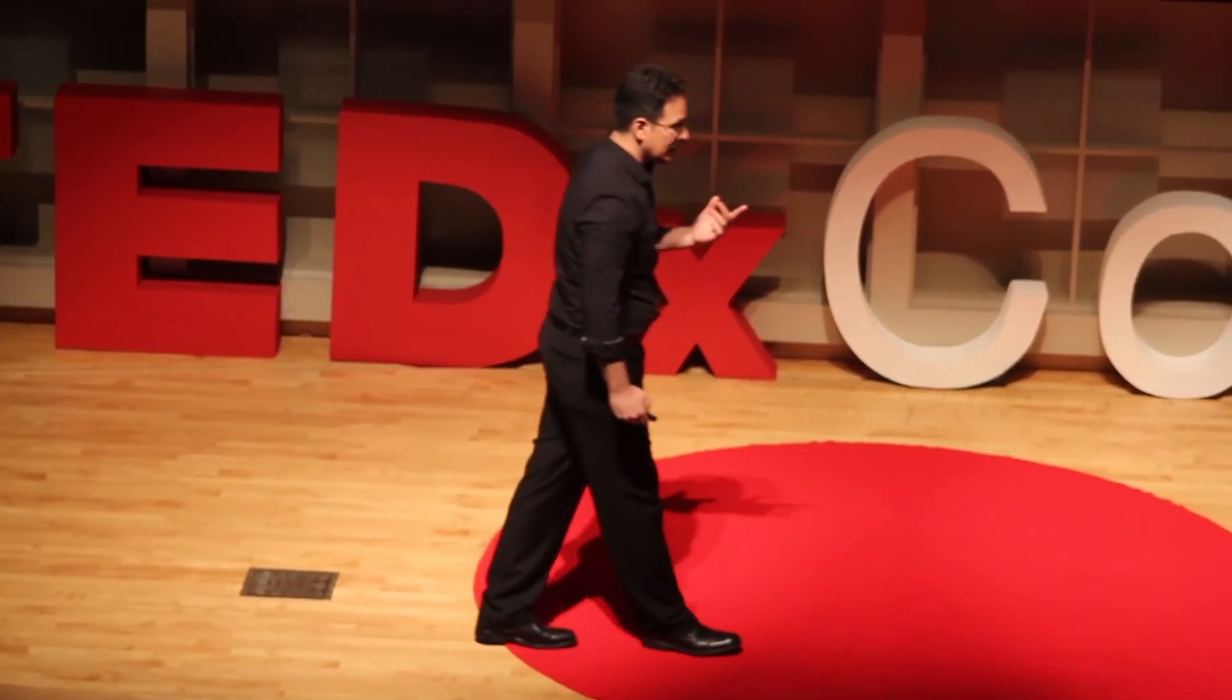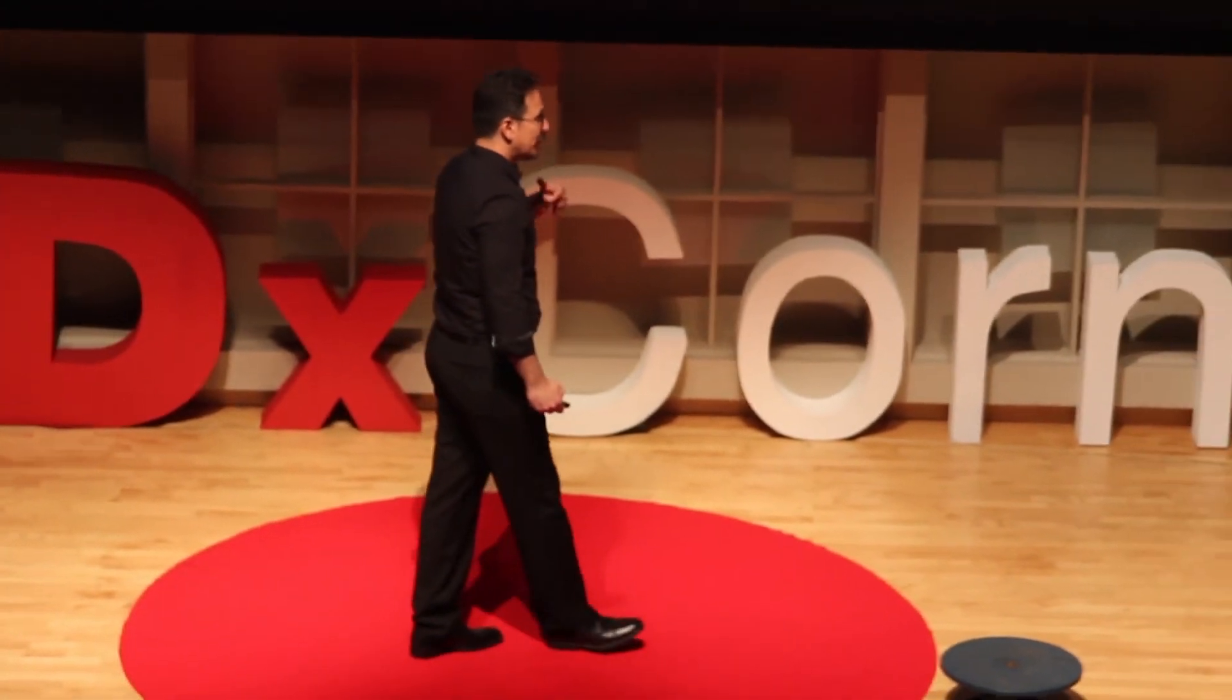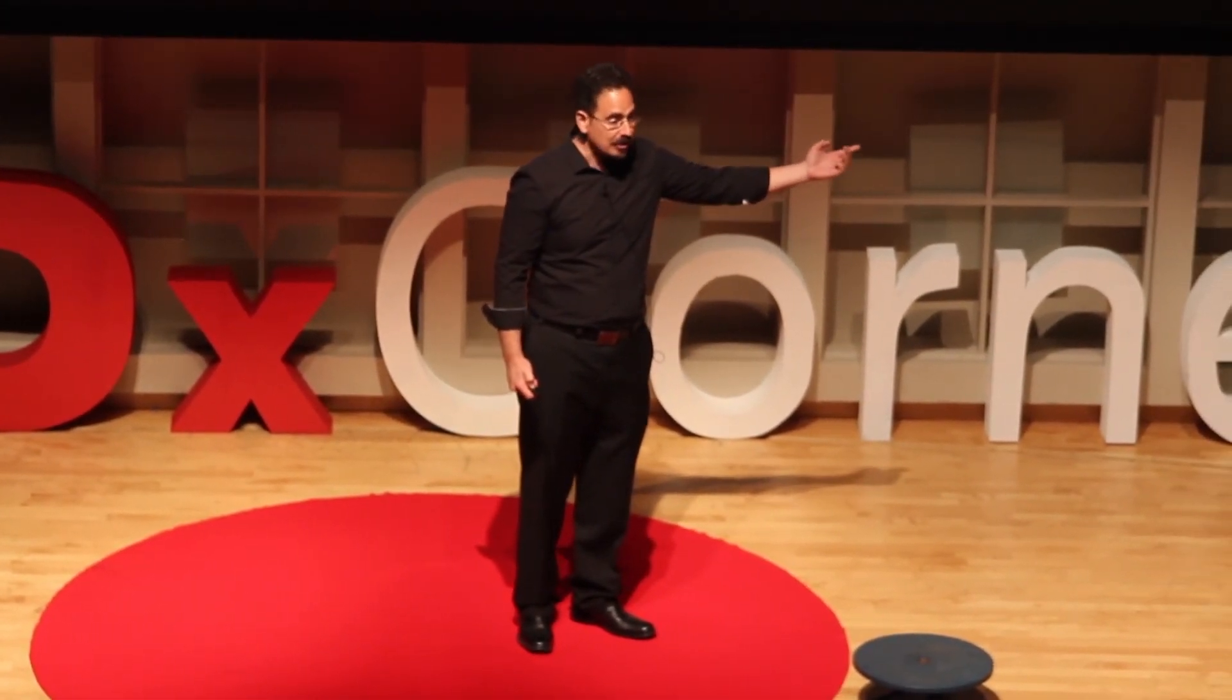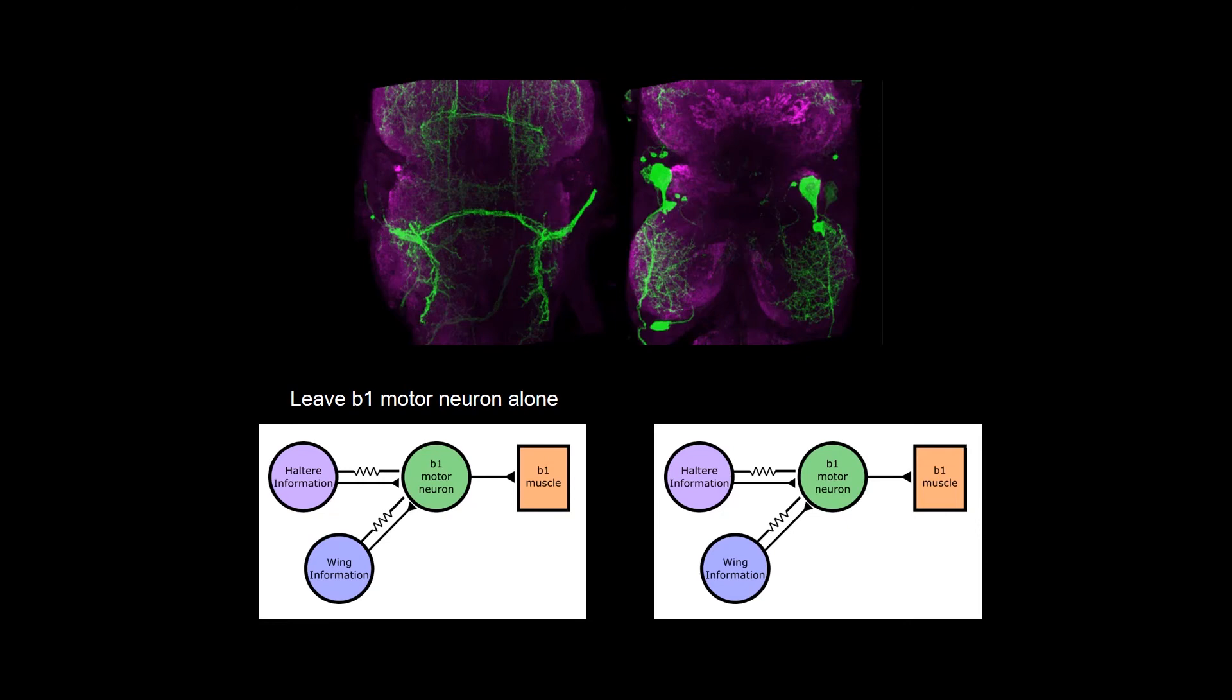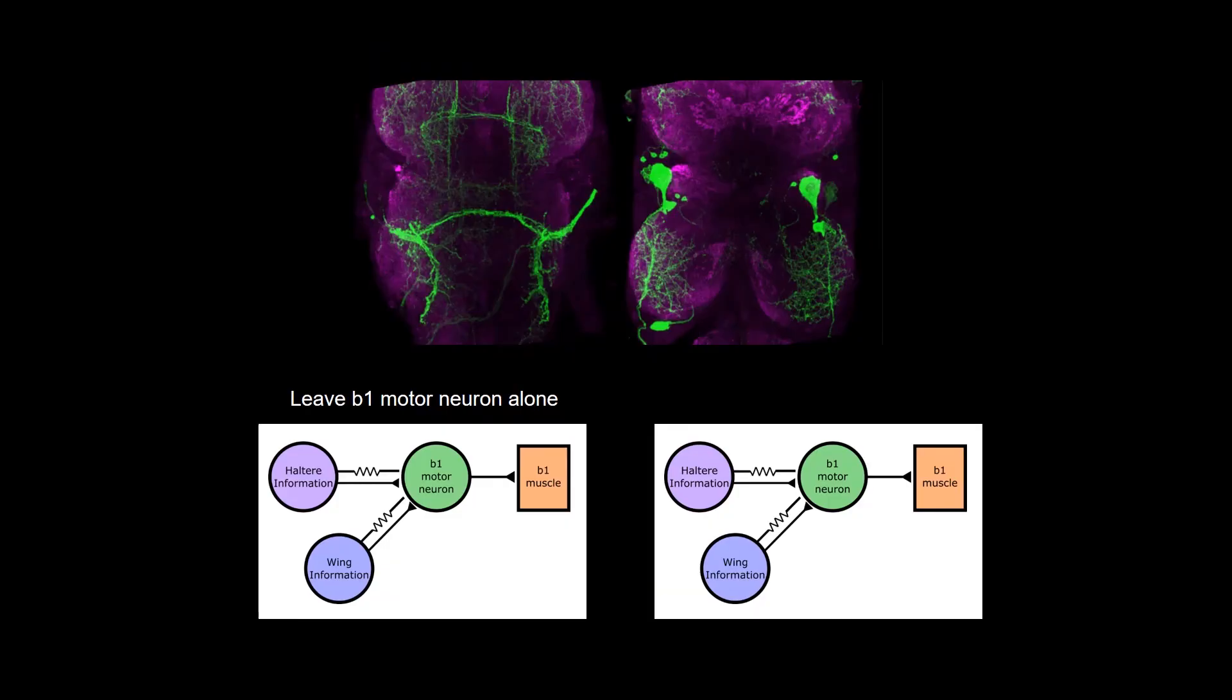And so the amazing thing is that nowadays we can go to the Howard Hughes Medical Institute and we can essentially order flies where that individual neuron has been identified and we can turn it off. That one neuron, we can turn it off. And that silences that one muscle. And then we can see whether or not any difference happens when we take that muscle out.